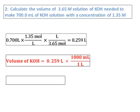That's what is written there. 0.7 times 1.35 times liters divided by 3.65 equals 0.259 liters. Therefore, the volume of the solution I need is 0.259 liters.